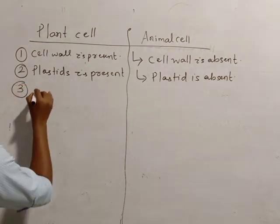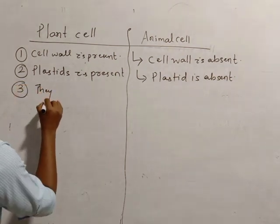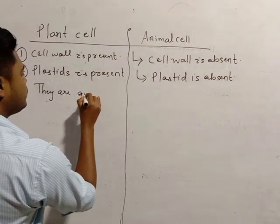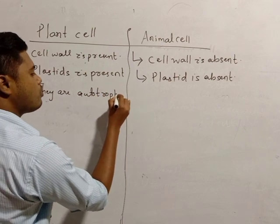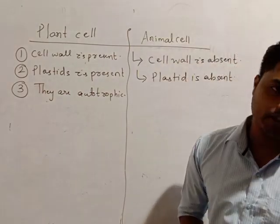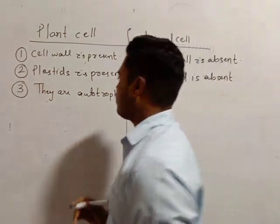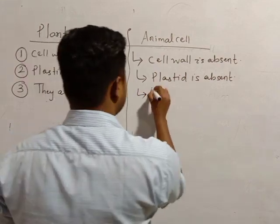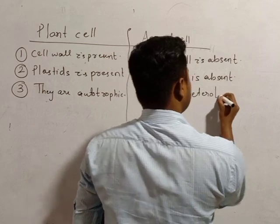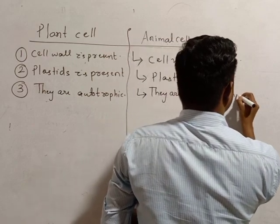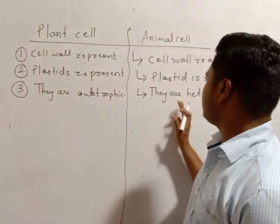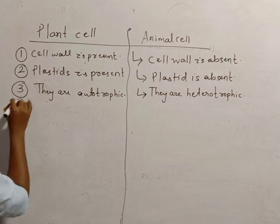Here plant cells, they are autotrophic, meaning they can prepare their own food through the photosynthesis process. They can prepare their own food themselves, so they are autotrophic. Animal cells are heterotrophic because animal cells cannot prepare their own food themselves, so they are heterotrophic.